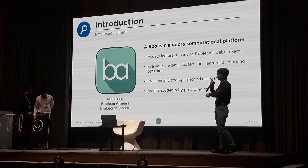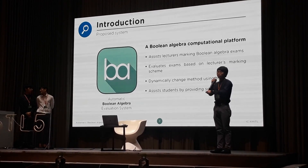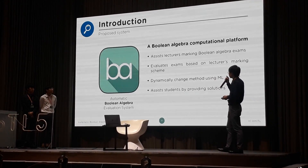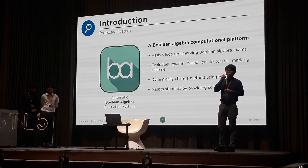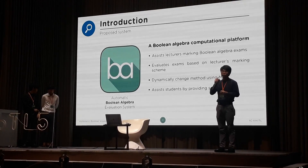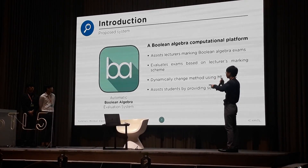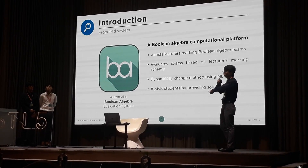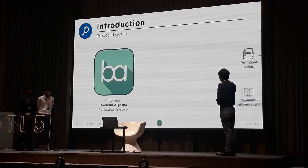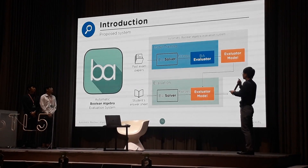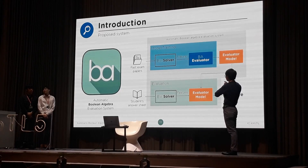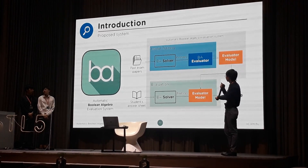The system can assist lecturers to evaluate the paper according to the lecturer's preference, because each professor has his own preference. Before we can evaluate the student answer, we have to solve the questions first — solve the questions in Boolean. We can then use that module to assist students by providing solutions. After constructing the architecture of our system, we separated it into two big parts: the training part and the evaluation part.